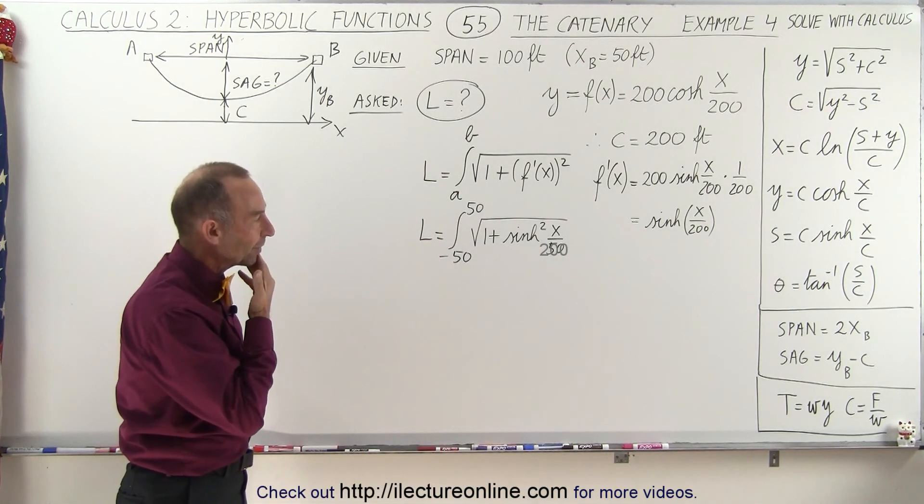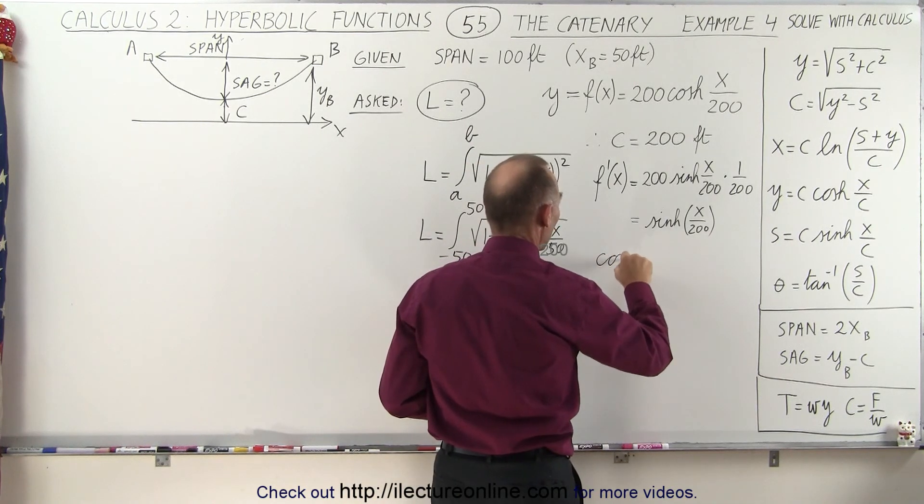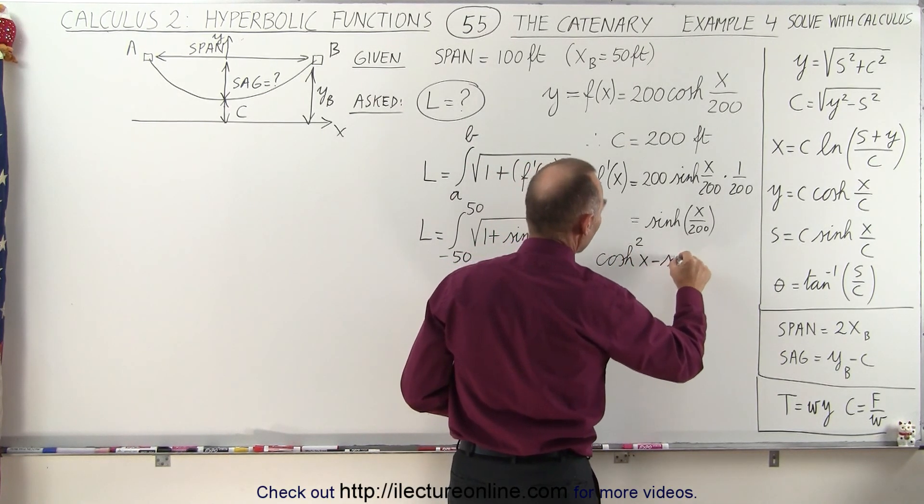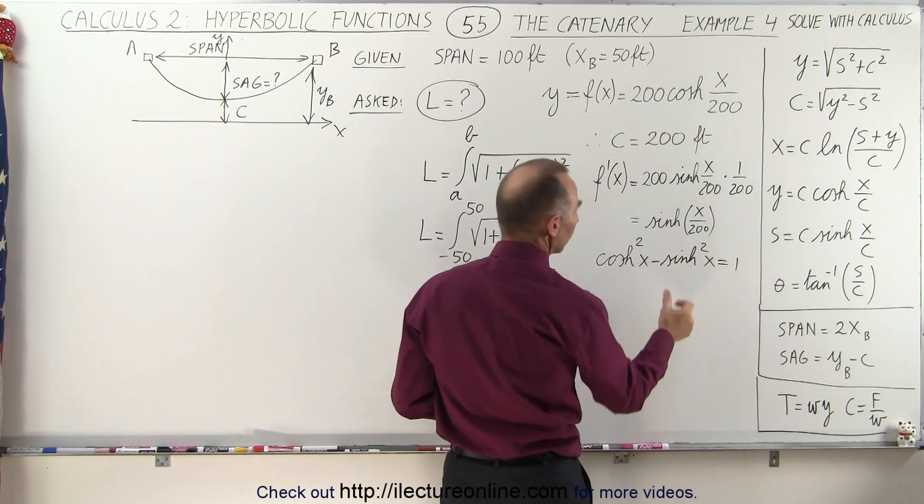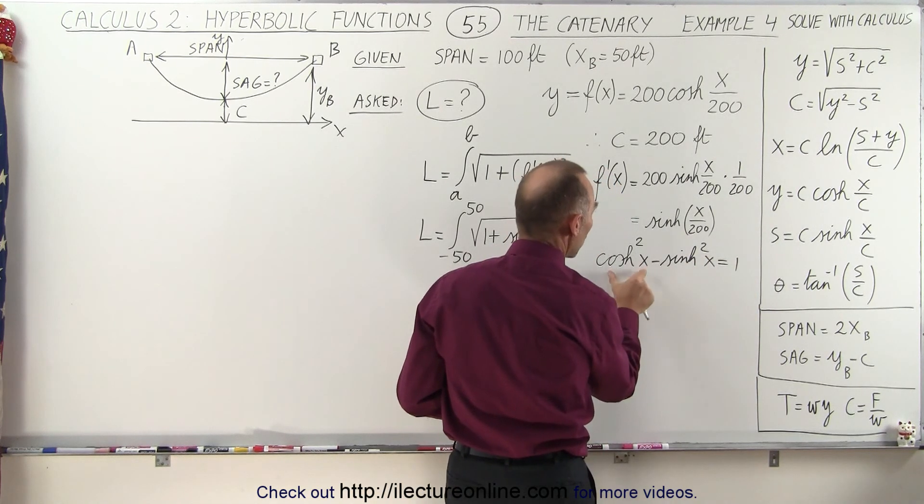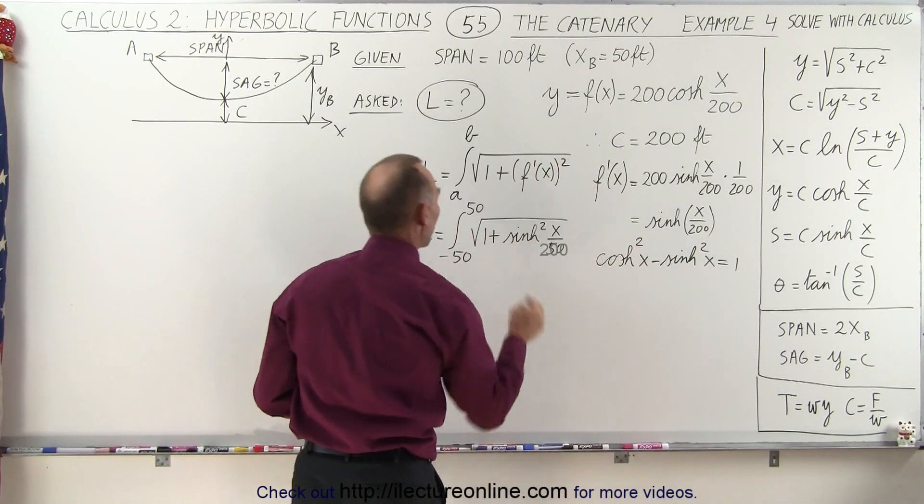Now we have 1 plus the hyperbolic sine. If we remember, we know that the hyperbolic cosine squared of x minus the hyperbolic sine squared of x is equal to 1. So when we move this over to the other side, we now have the hyperbolic cosine squared of x is equal to 1 plus the hyperbolic sine squared, which can go in here.